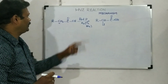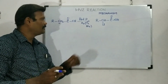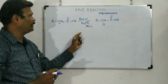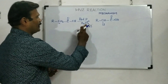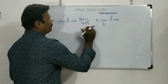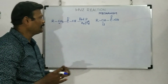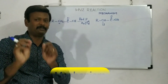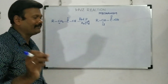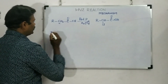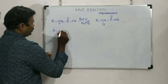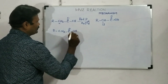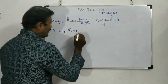In the presence of red phosphorus, we can add halogens like chlorine or bromine. Depending on the halogen used, we get the corresponding product. If chlorine is used, we get the chlorinated product. We need only a very small amount of red phosphorus, and then it forms its respective halides. Let's see the mechanism — the reactant is RCH₂-COOH.